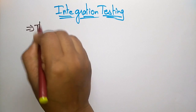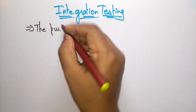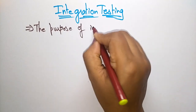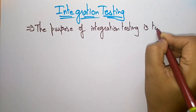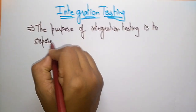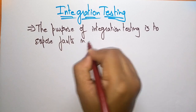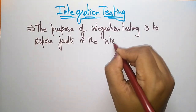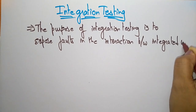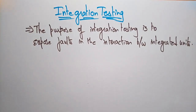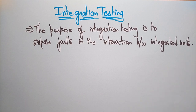The purpose of integration testing is to expose faults in the interaction between integrated units. The main use of integration testing is to expose the faults that arise when there is an interaction between integrated units.